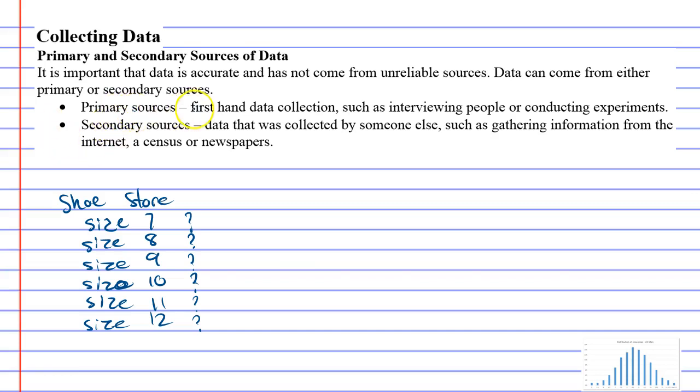If we were to do what's called a primary source, that's firsthand data collection. That's where you are the one going out and finding this out. You could be doing it by interviewing people, conducting experiments, just by observation as people walk into your store maybe.